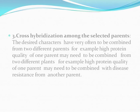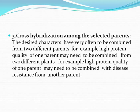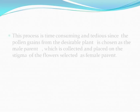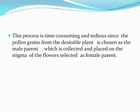Cross-hybridization among selected parents: the desired characters very often have to be combined from two different parents. For example, high protein quality of one parent may need to be combined with disease resistance from another plant. This is possible by the method of cross-hybridization, that is, cross-hybridizing the two parents to produce hybrids that genetically combine the desired characters in one plant. This process may be time-consuming and tedious, since pollen grains from the desirable plant chosen as the male parent are collected and placed on the stigma of the flowers selected as the female parent.